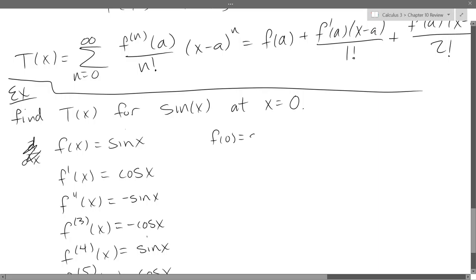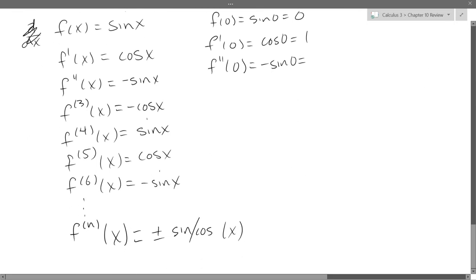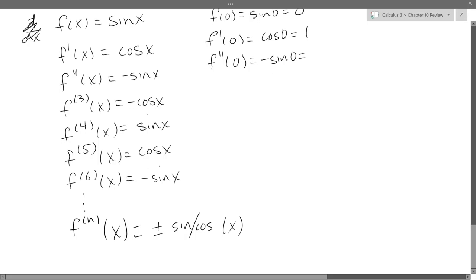So let's go ahead and actually plug in zero now. So f of zero is sine zero, which is zero. f prime of zero is cos zero, which is definitely not zero, that's positive one. f double prime of zero.